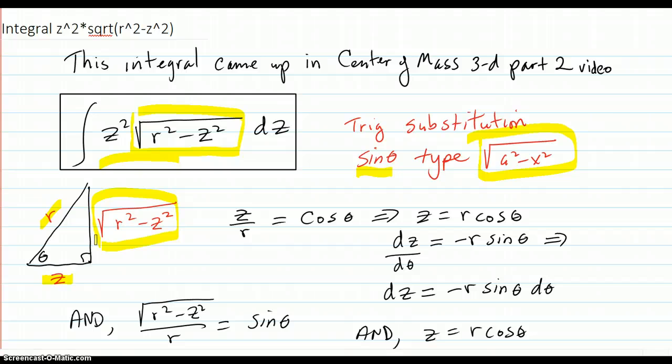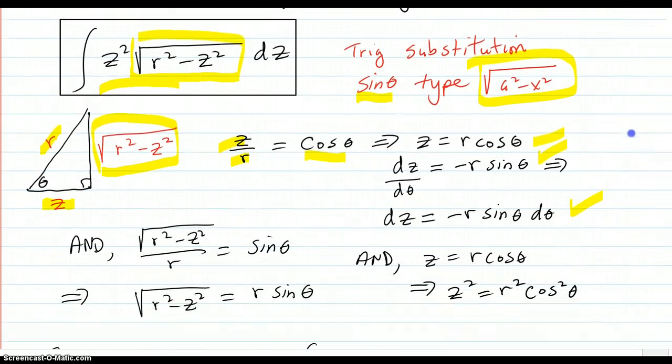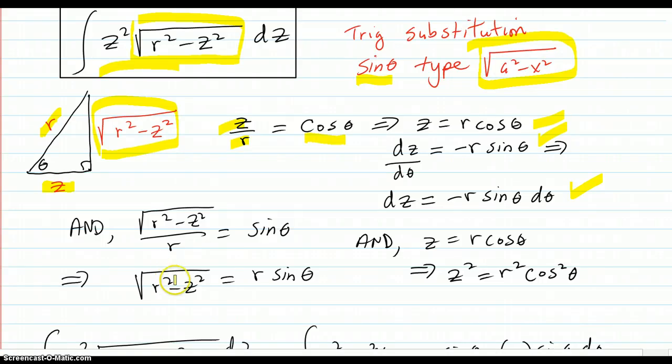Okay, so now we see that z over r is adjacent over hypotenuse, so that's cosine of that angle. And that implies this. And then you differentiate with respect to theta, dz d theta, you get this. And you move the d theta over and you get this. So there's your dz substitution. But also, we have the sine theta is, of course, the side opposite over the hypotenuse. That's the sine.